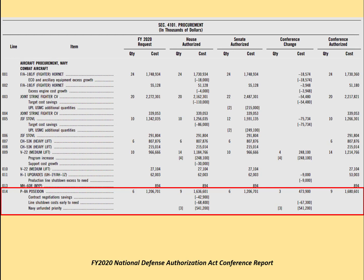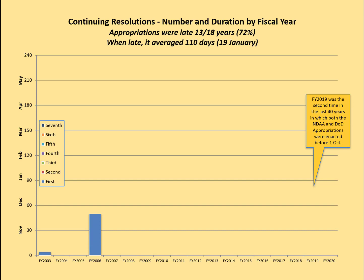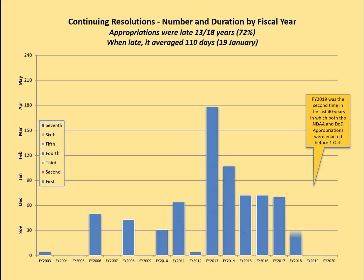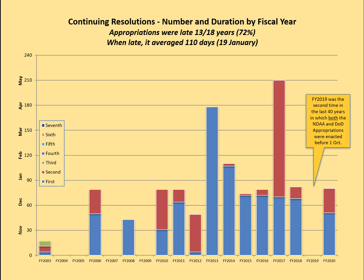This is how the department sometimes gets a different amount than what was requested — you can see a different amount for the V-22 as well. The appropriations are not always done on time; sometimes there's a continuing resolution. This chart shows continuing resolutions from FY 2003 through FY 2020. In five of those years there was no continuing resolution and the appropriation was enacted on time. But in 13 of those years — about 72% — there was at least one continuing resolution.